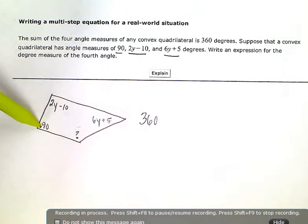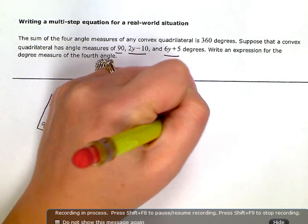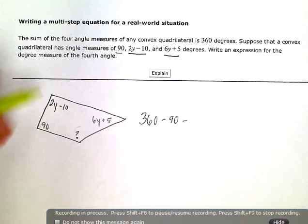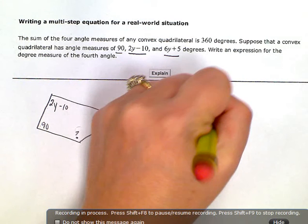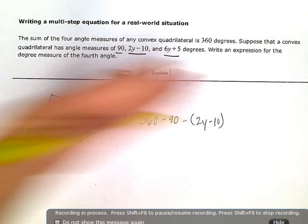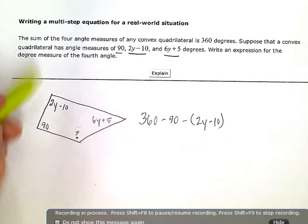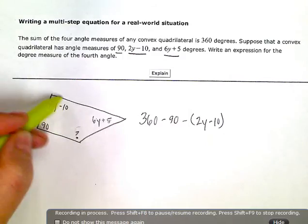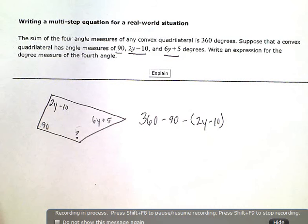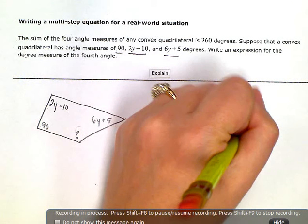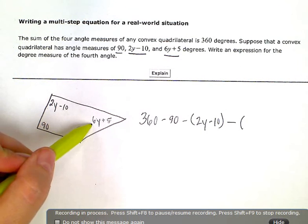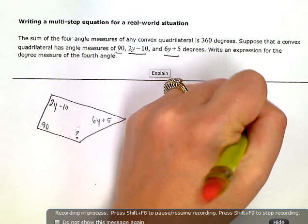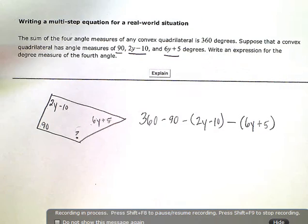So first I'm going to subtract out 90. Then subtract 2y minus 10. Now I'm going to put this in parentheses because I'm subtracting that entire thing. Not just the 2y or just the 10. I have to subtract both of those terms. And then I need to subtract the same thing with this angle. I'm subtracting that entire thing. Not just the 6y or just the 5. The entire thing. So there's my expression.